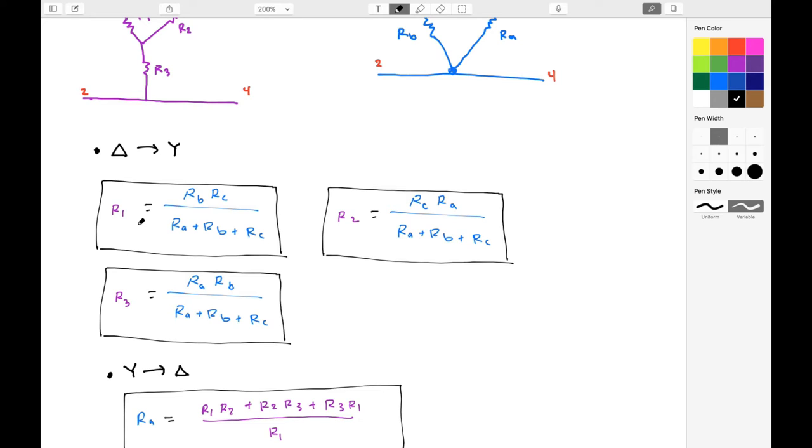So from delta to Y, I would take that R1 is equal to Rb, Rc over the sum of Ra plus Rb plus Rc.